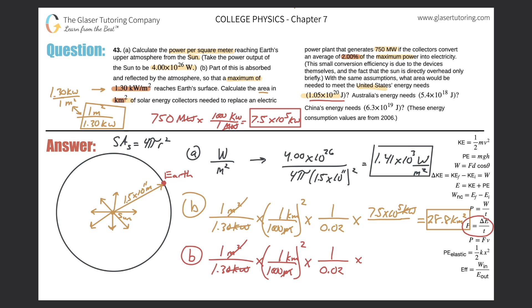Here's the formula: power equals energy over time. So in order to calculate power, I need energy in joules and I need time. They didn't tell us the time directly — they said the United States energy needs is 1.5 times 10 to the 20.